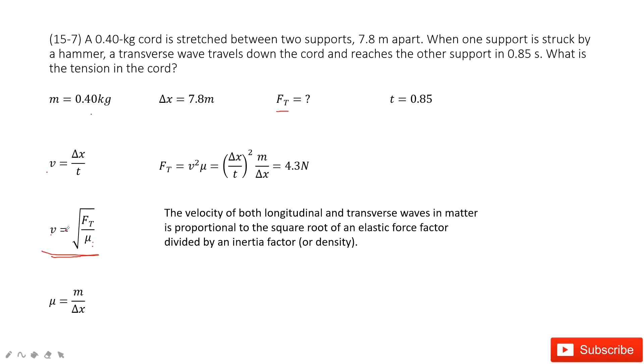So we solve this equation. Ft function is there: v squared times μ. And v can be obtained by this function, and μ is the density. Now you input known quantities and get the answer there.